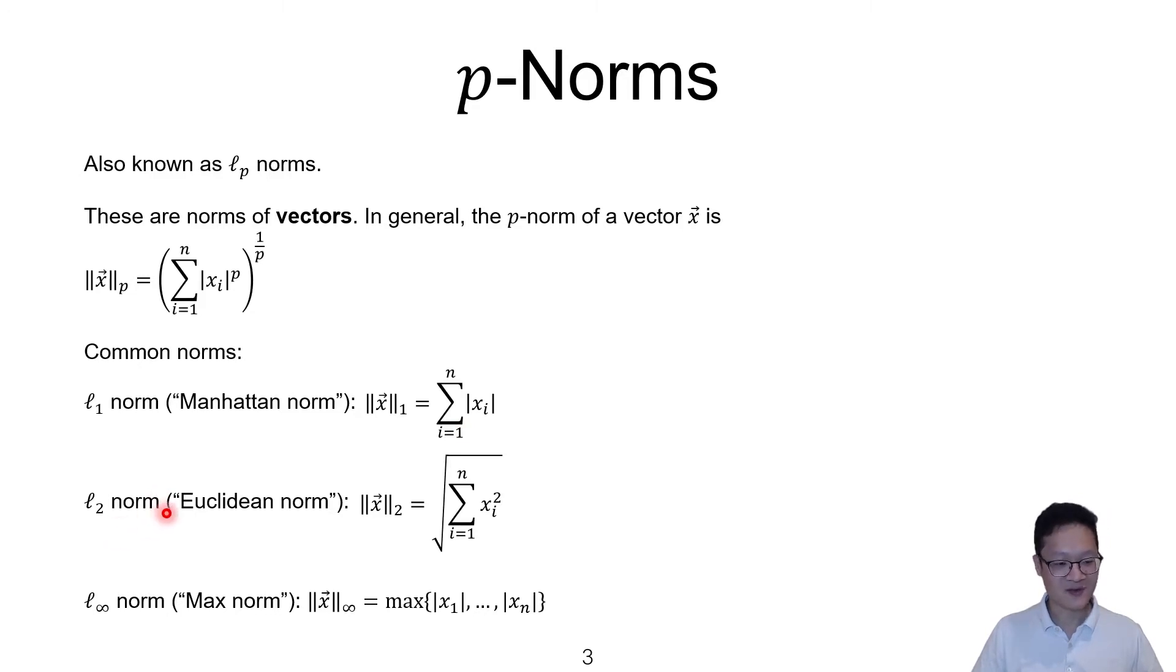The l2-norm, which is the familiar Euclidean-norm or the Euclidean distance or length, that's given by the sum of squares of all the components. And then square root the result, right? Square root is the same as taking the entire expression to the power of 1 over 2.